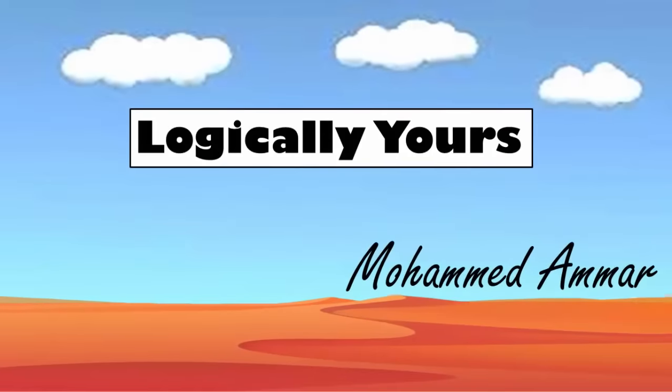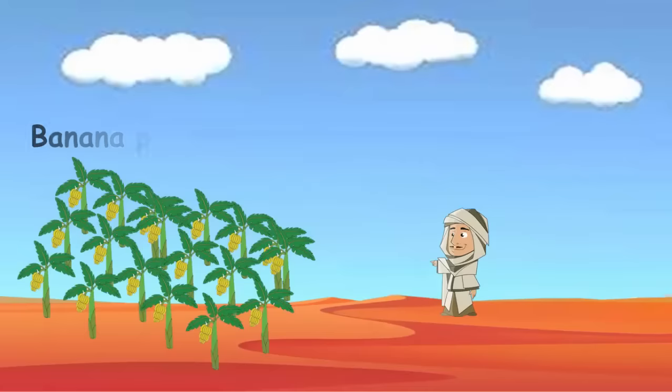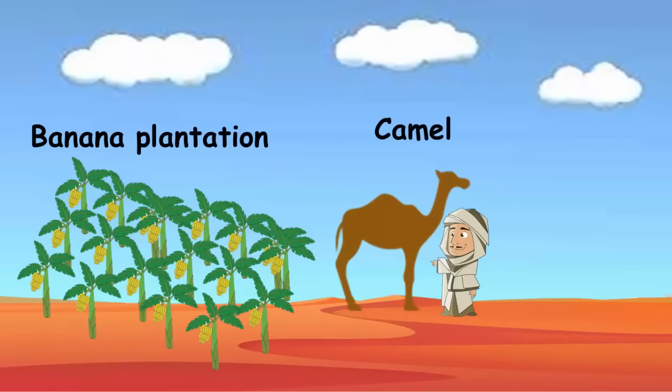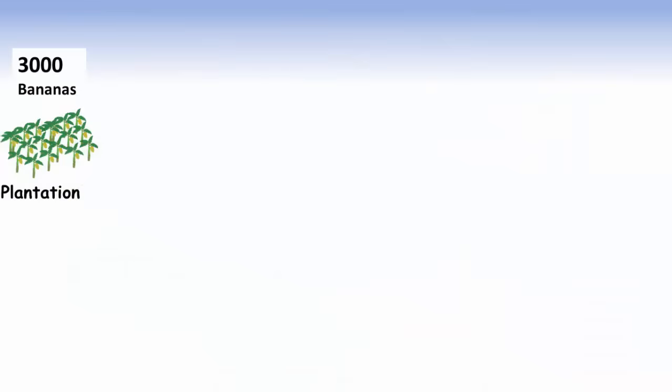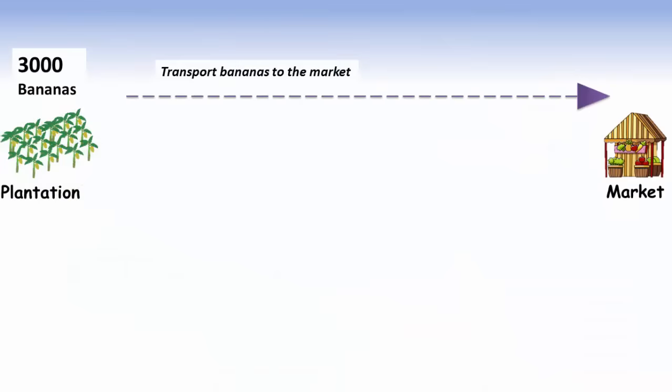What's up logical people, this is Ammar. You are the owner of a banana plantation and you have a camel. You want to transport 3000 bananas to a market which is located at a distance of 1000 km from your plantation.